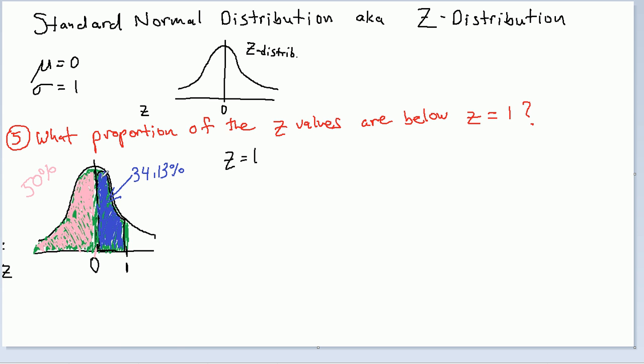So if I know this part is 34, this part's 50, at this point, it's simple geometry. I just add those two areas up, whether you like using percentages or decimals. You'll get 84.13% of the data is below Z equals 1.